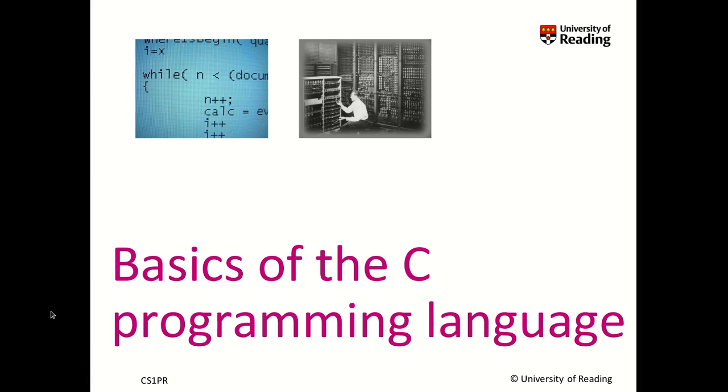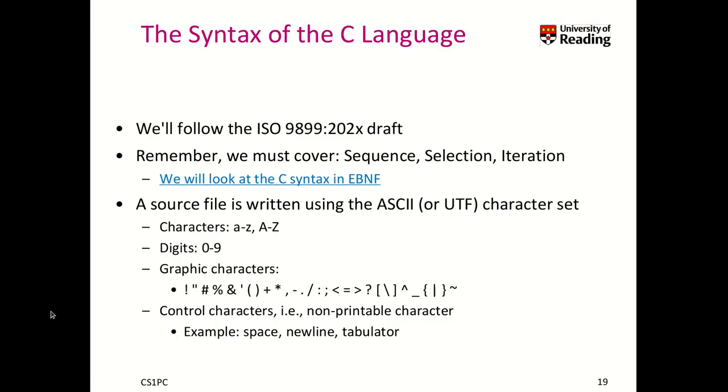So now we will look at basics of the C programming language. We follow there with one of the ISO drafts that you can read about. And remember, as any kind of programming language or any kind of algorithmic specification, we must cover the three core concepts of the programming theory, which are sequence, selection, and iteration.